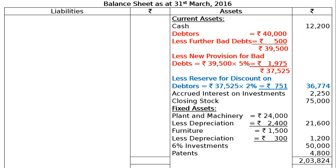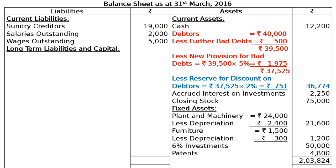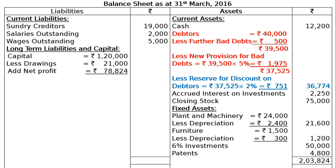The asset side totals Rs 2,03,824. On the liabilities side, current liabilities: sundry creditors Rs 19,000; outstanding salaries (adjustment) Rs 2,000; outstanding wages Rs 5,000. Under long-term liabilities and capital: capital Rs 1,20,000 less drawings Rs 21,000, plus net profit Rs 78,824 = Rs 1,77,824 in the final column. The liabilities side also totals Rs 2,03,824, and this is the final answer.